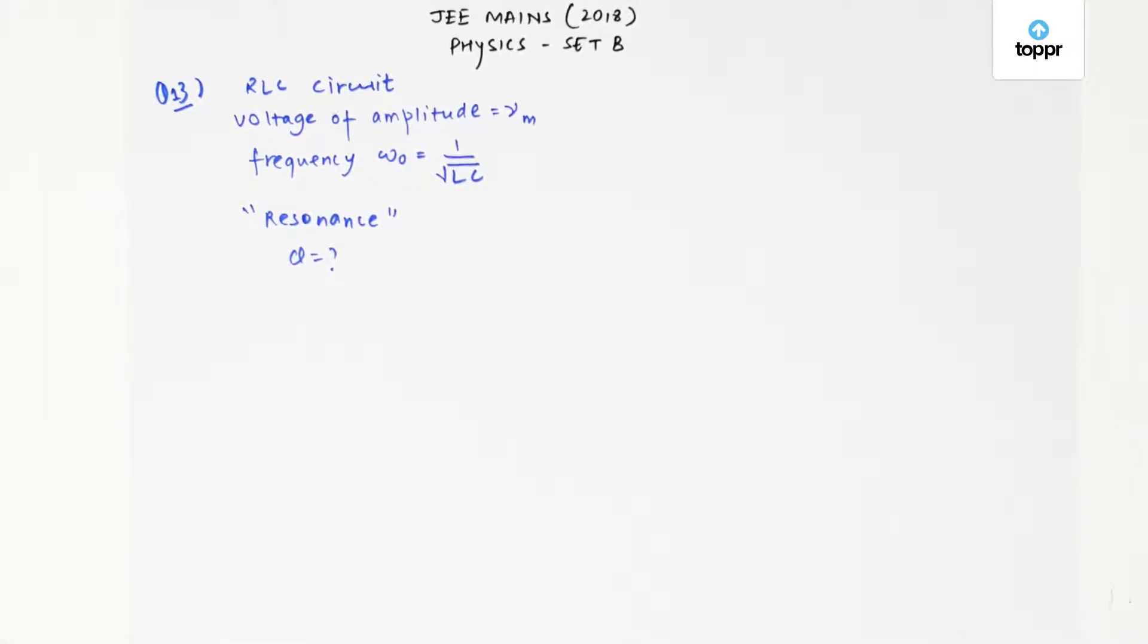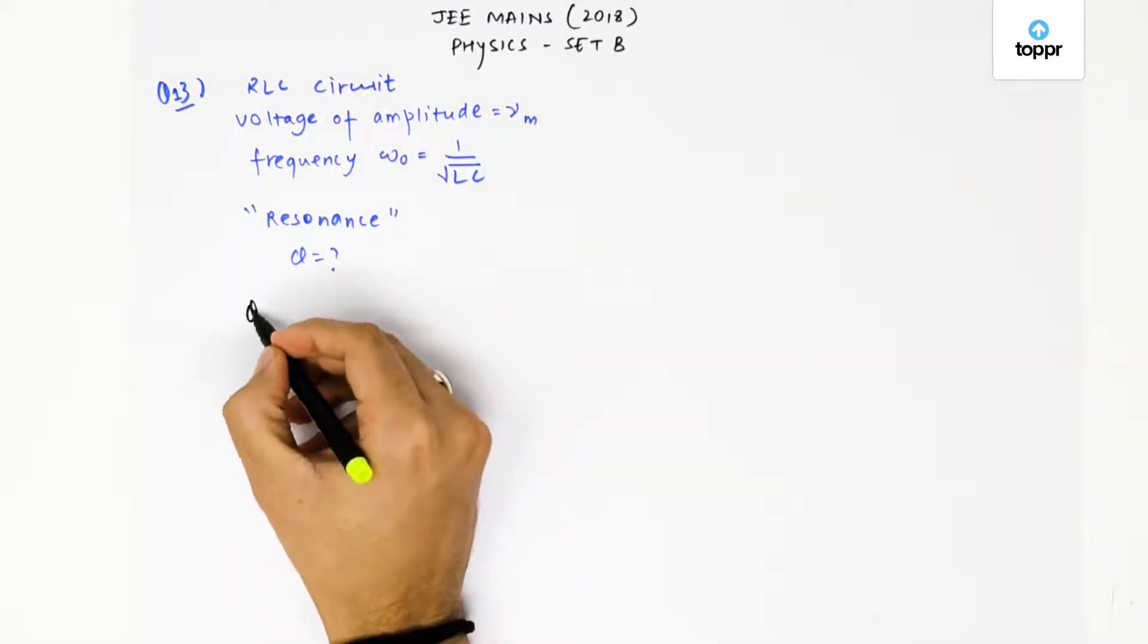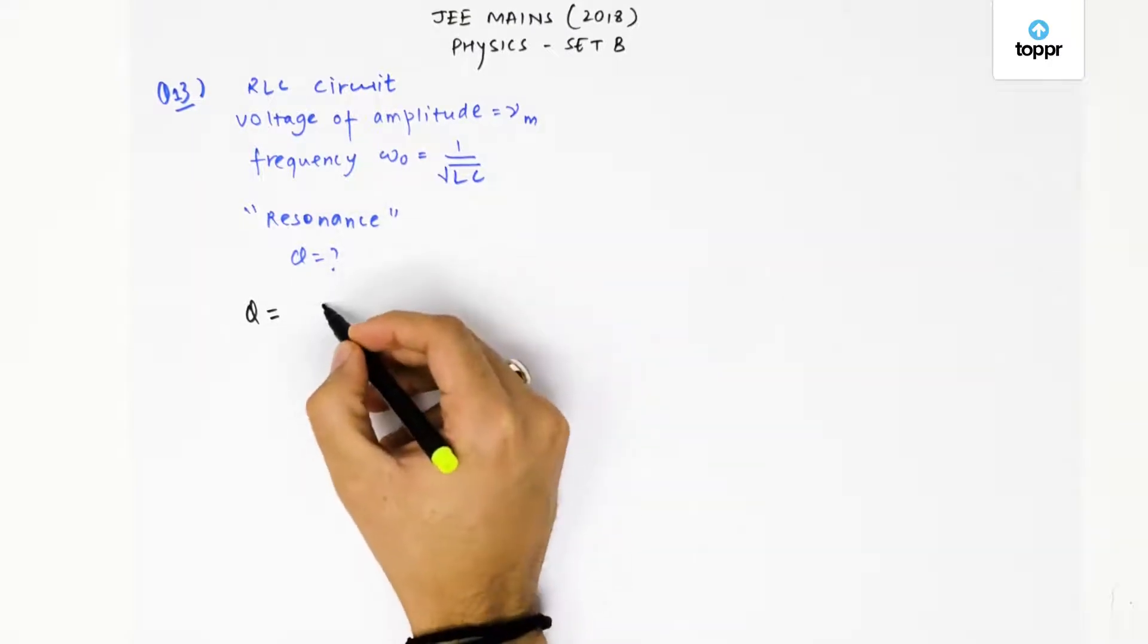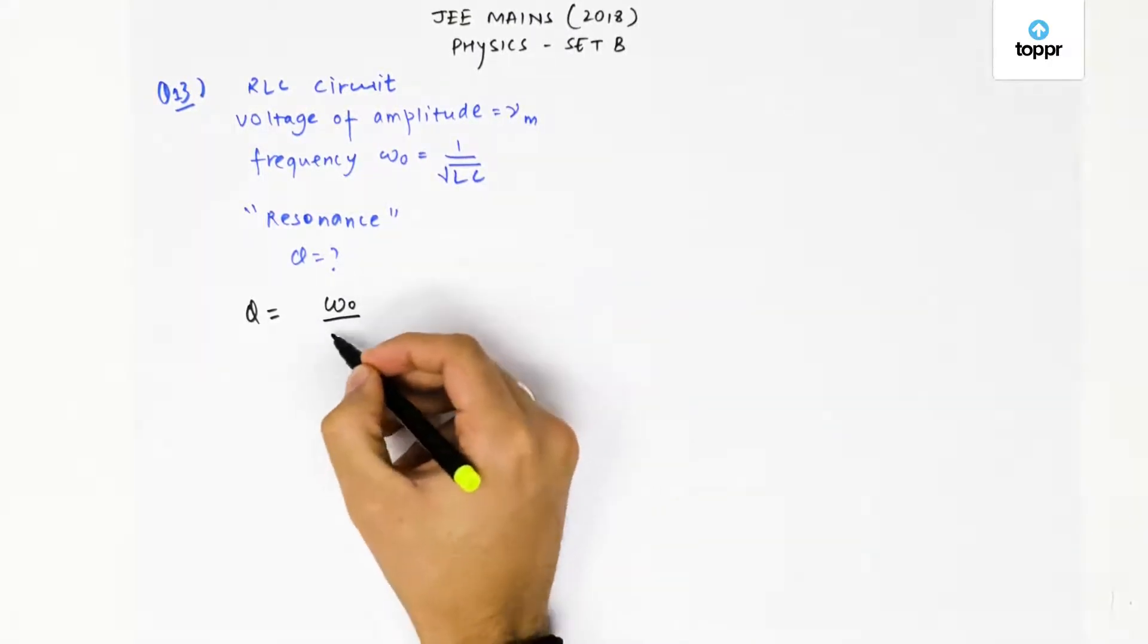What is the formula for quality factor? The formula of quality factor is Q = ω₀/Δω.